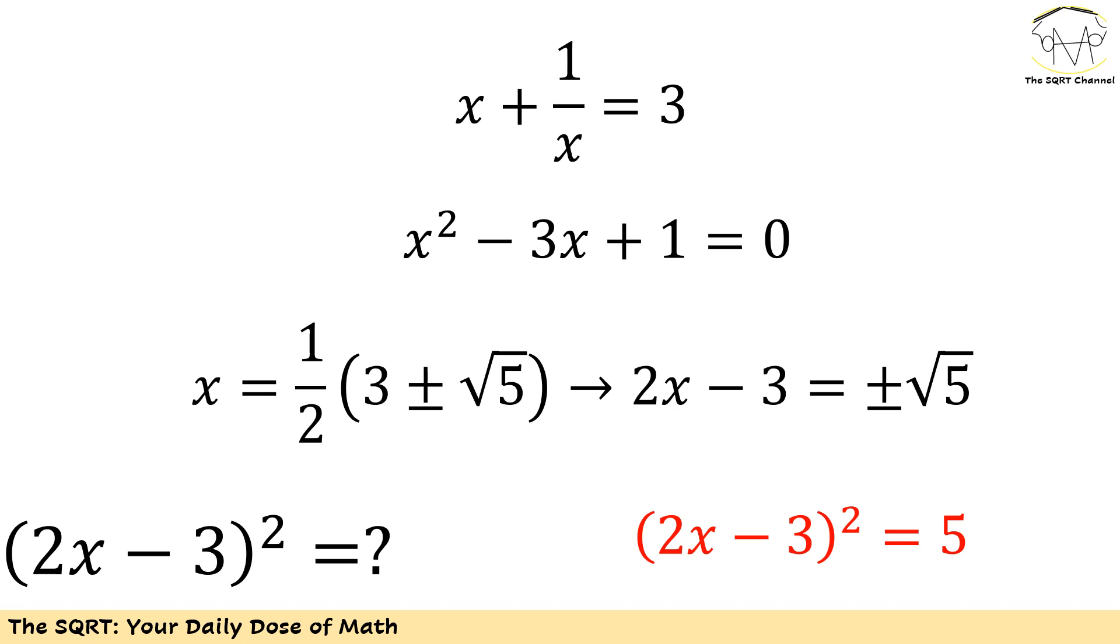I'm going to end up with x is going to be 3 plus minus radical 5 over 2. Now we want to find 2x minus 3 to the power of 2, and you can see that it's going to be 5 here.